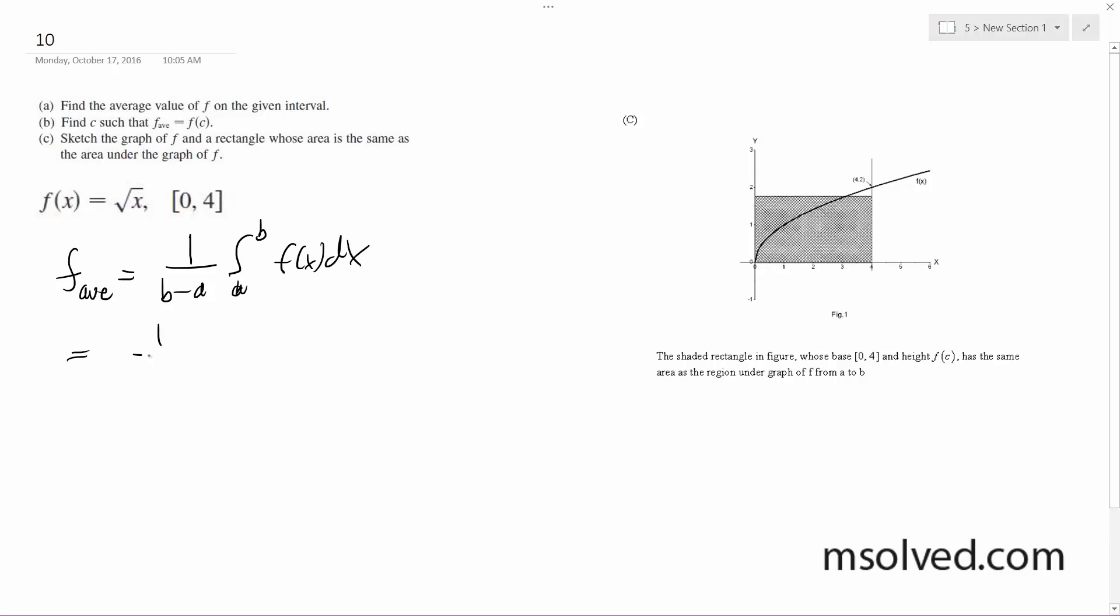We have 1 over 4, from 0 to 4, square root of x dx. And we'll have 1/4 times 2/3 x to the 3/2 going from 0 to 4.